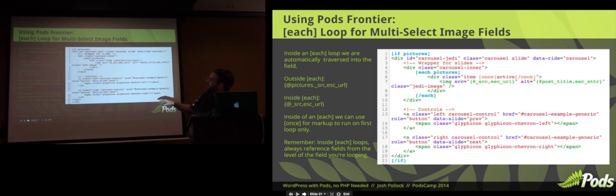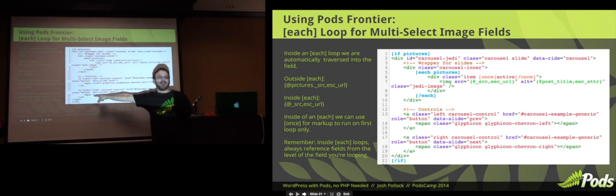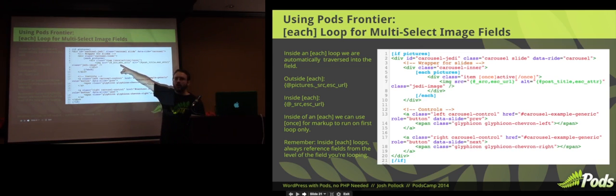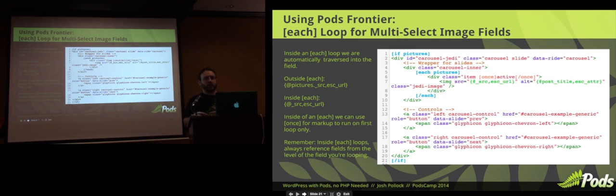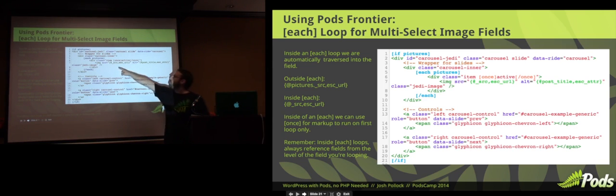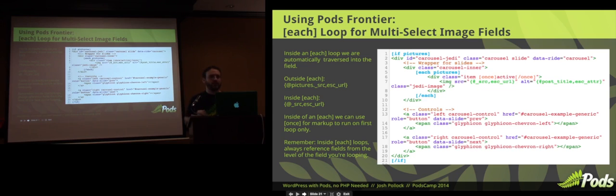The each loop ends, but that's separate from my if block — this entire slider I don't want to show unless I have pictures. Another thing we've added with Pods Frontier is the once block. Bootstrap wants the active class on the first item in the slider — that's how the JavaScript switches the active carousel item. So I say once active, and that means going through the each loop multiple times, the first time it will add the active class, and every other time it will skip it. This is really useful when we want special markup on just the first item.